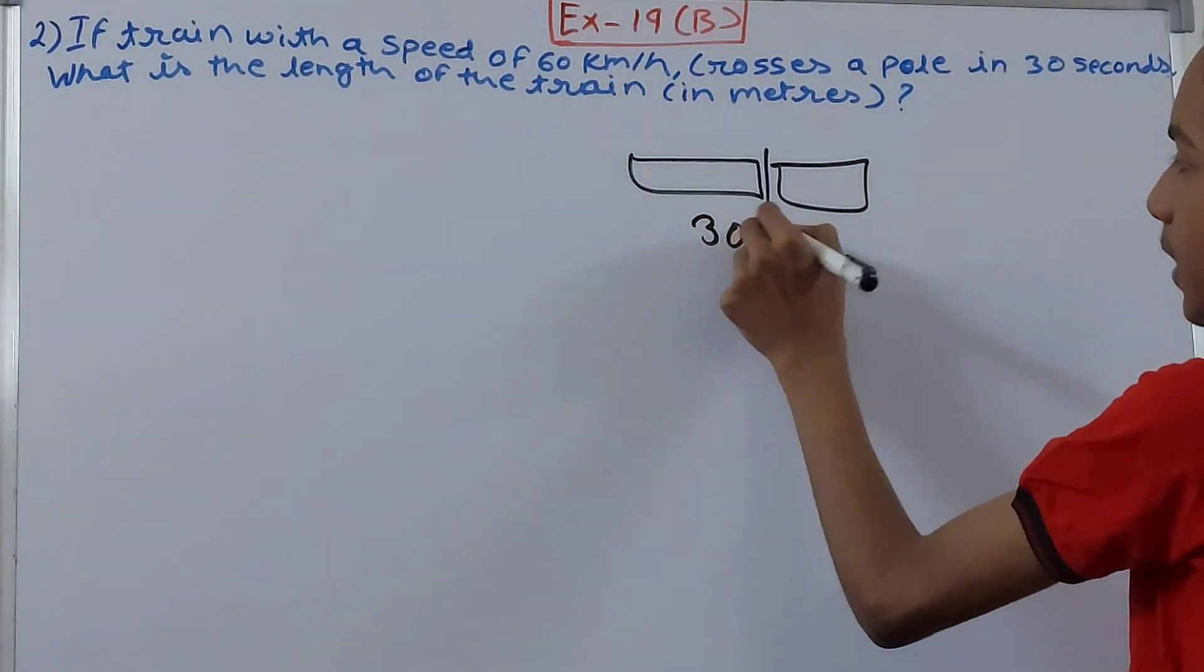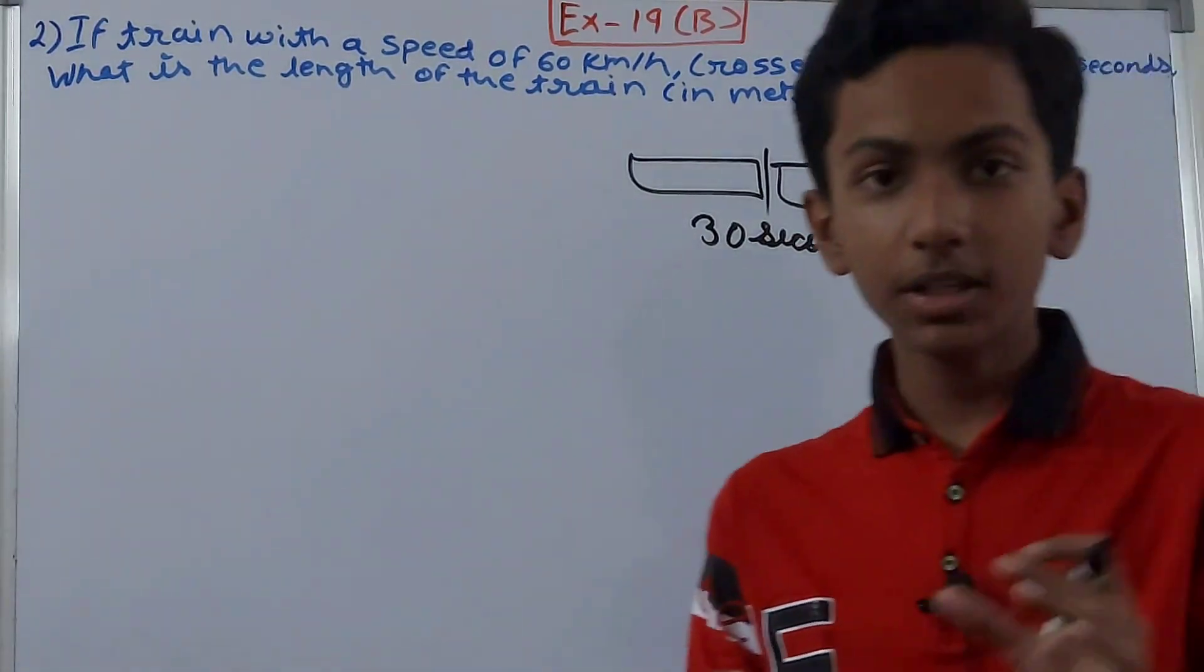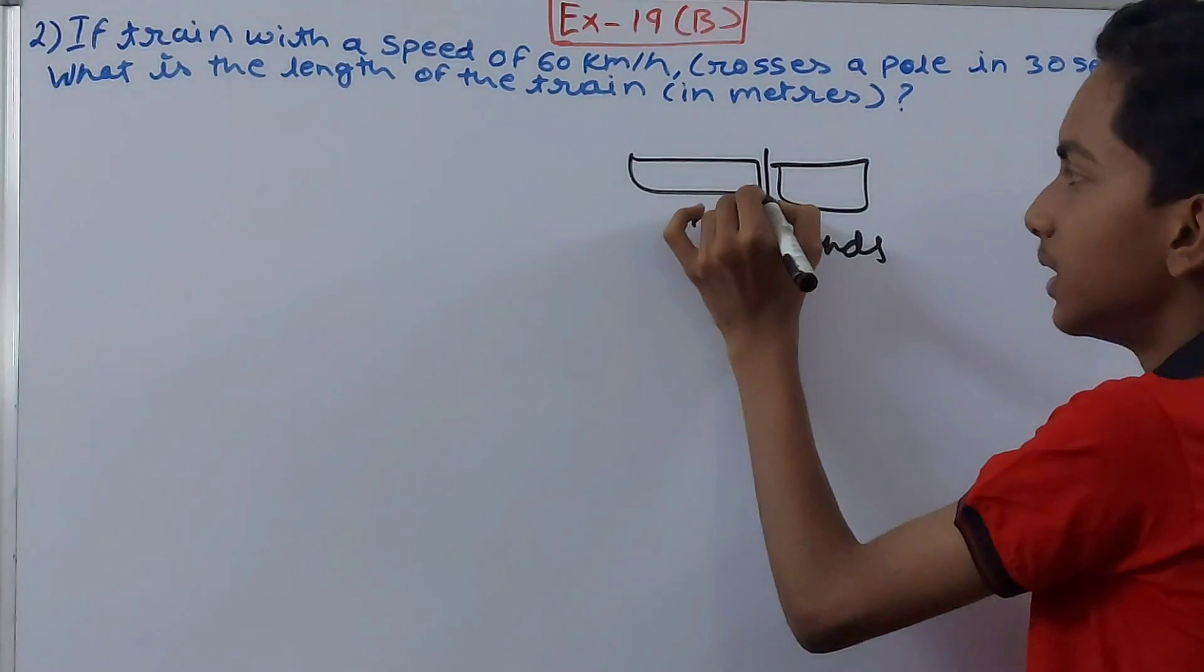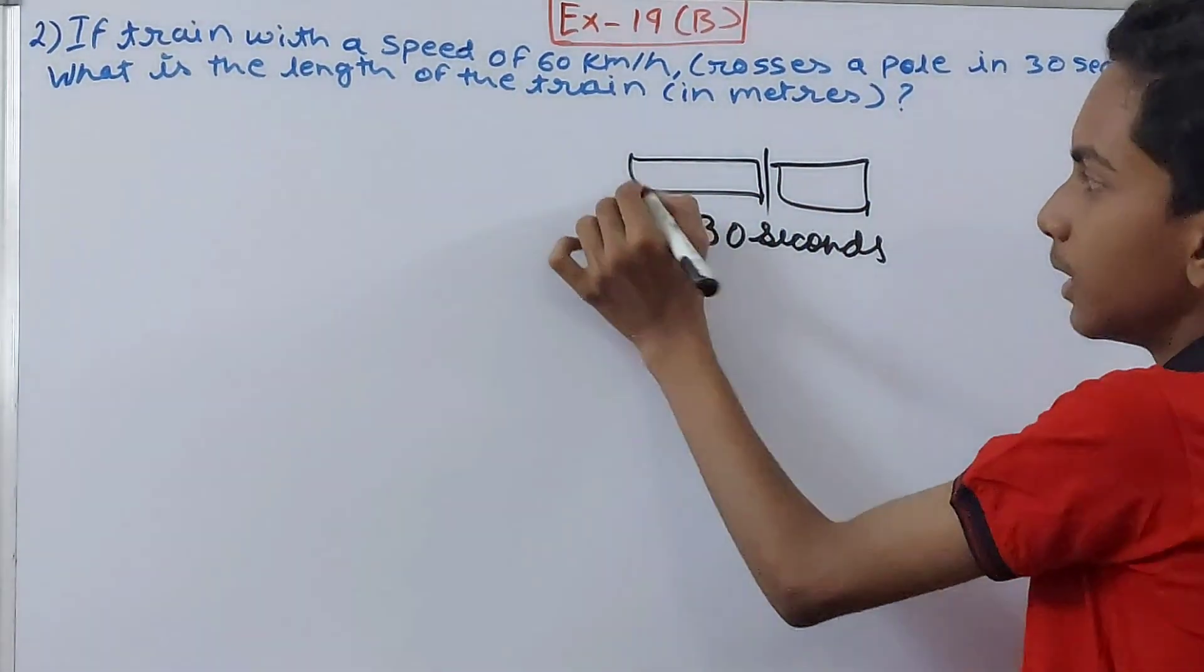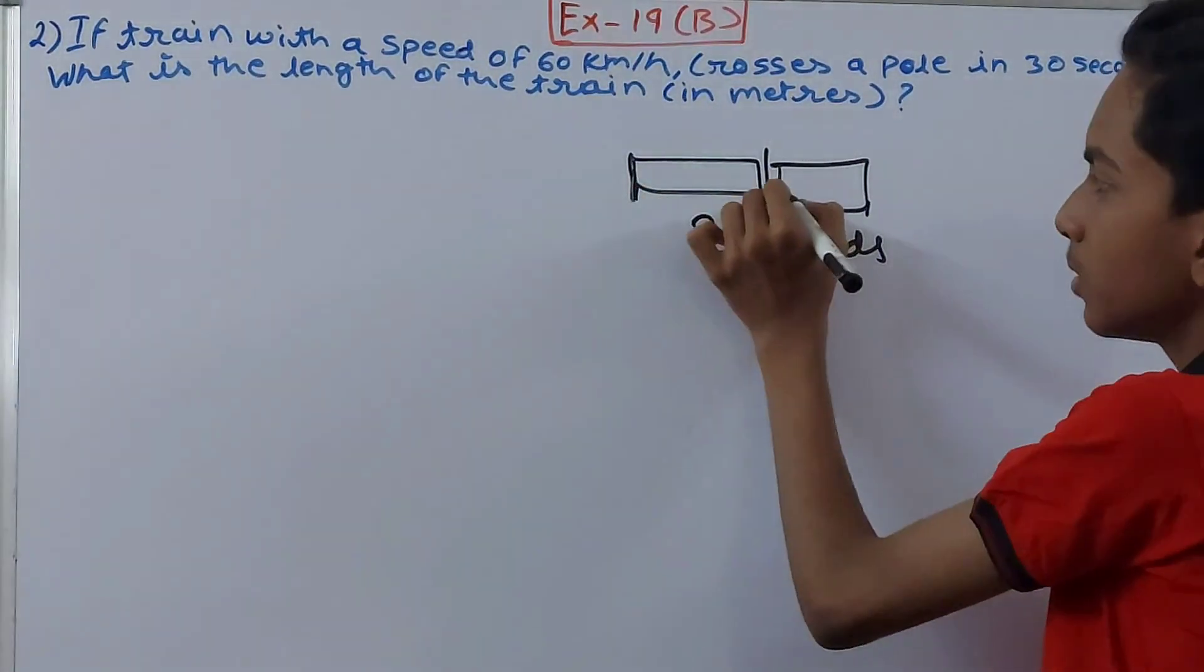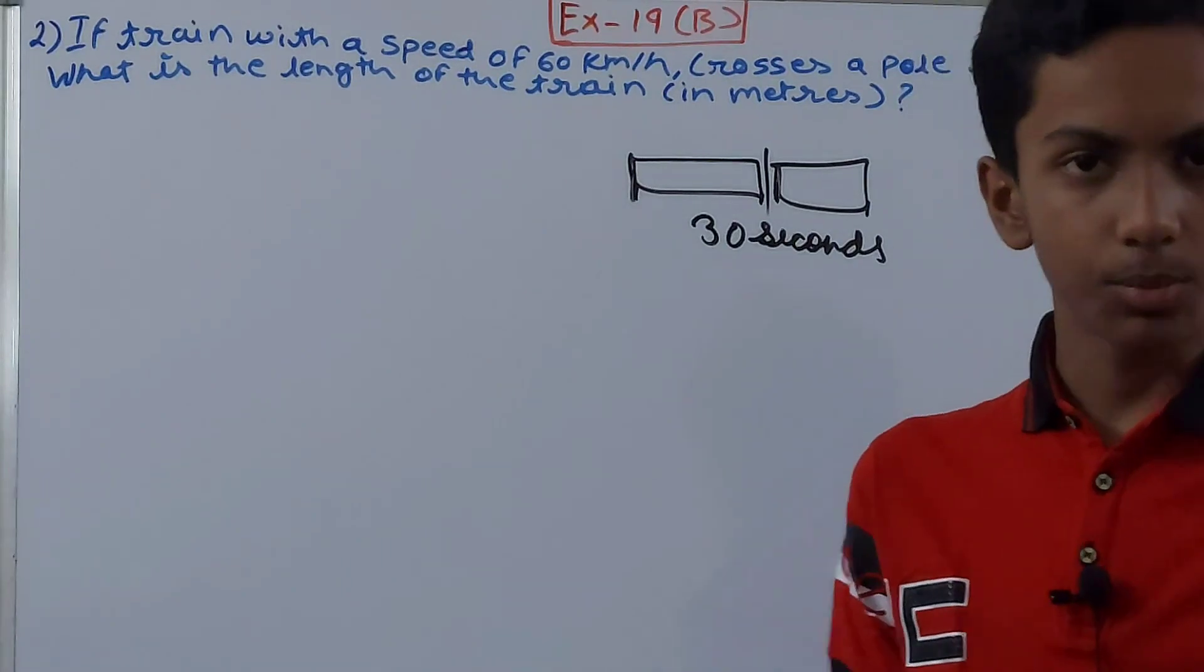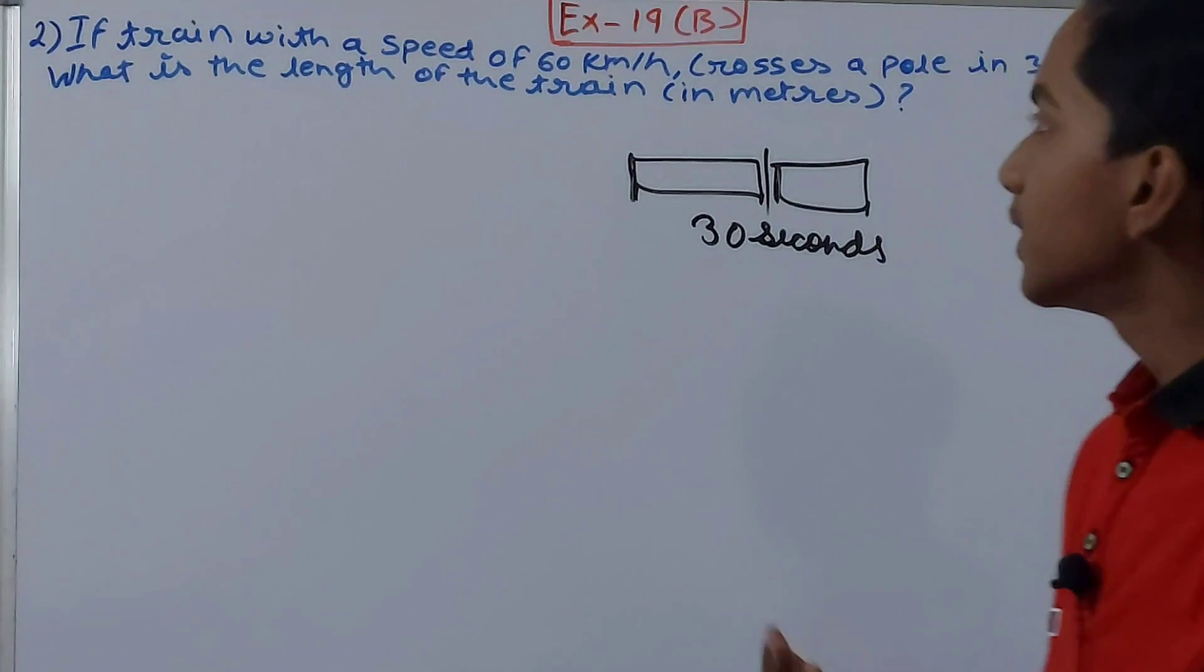The train crosses the pole in 30 seconds. That is the time taken by the train to cross a pole completely - this end will come here and the back end will also come right after the pole. This is when the train has completely crossed the pole, not in the middle or starting. Now you see that the speed of the train is given to us.